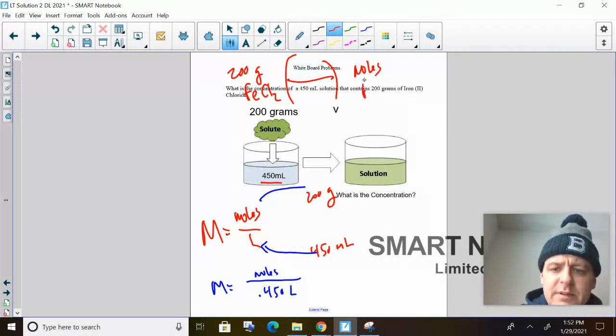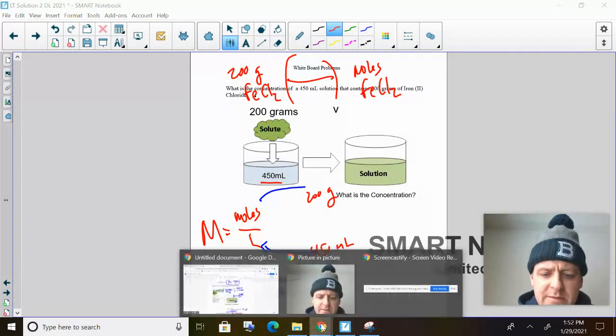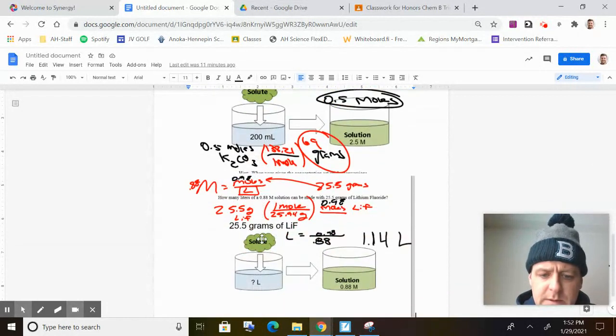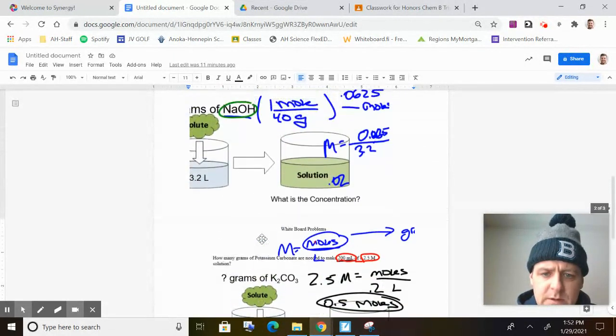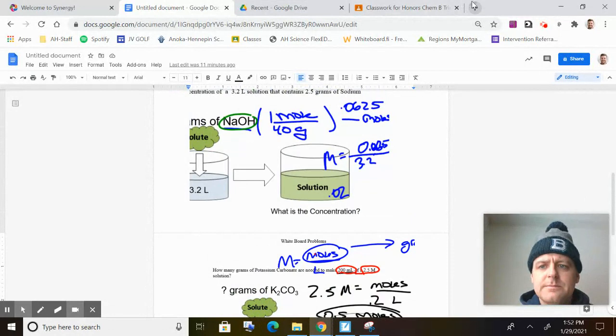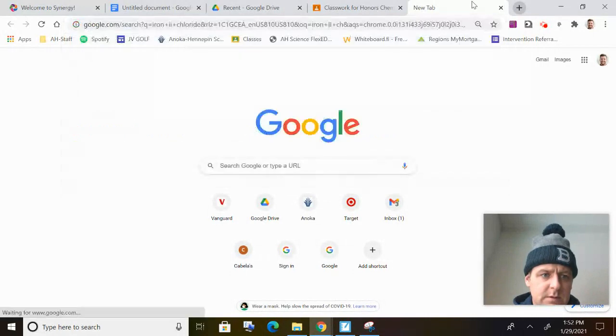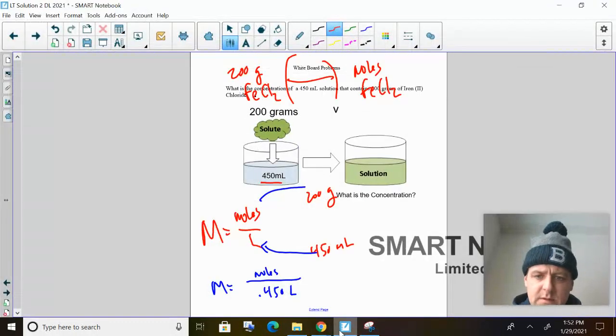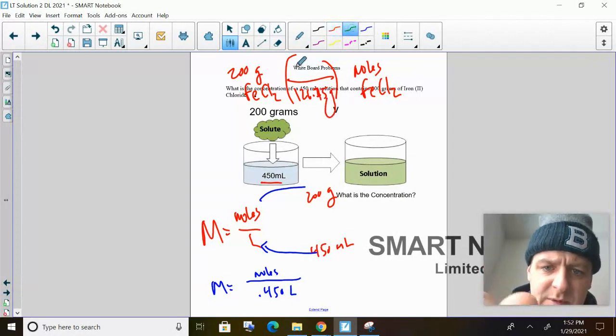200 grams of iron chloride. How many moles of FeCl2 is that? So 200 grams. So I look it up on the periodic table, 1 Fe, 2 Cls, and I find that the molar mass is not there. Molar mass of iron chloride, iron 2 chloride. 126.75.